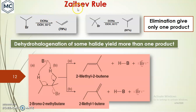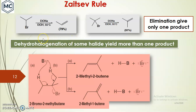First we will discuss what is Zaitsev rule. I've given two examples here. On elimination you get this product, and this tertiary butyl halide gives isobutene. In both cases elimination gives only one product, because dehydrohalogenation — hydrogen gets removed either from this carbon or from that carbon — and both carbons are the same. Here also both beta carbons are the same.